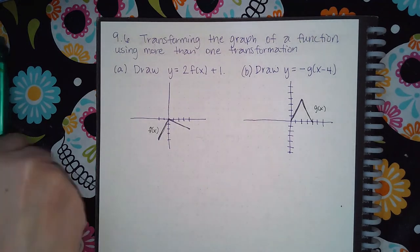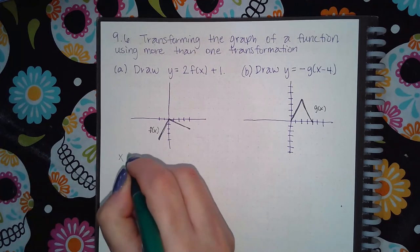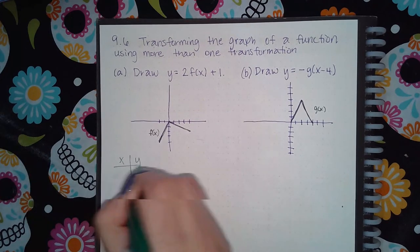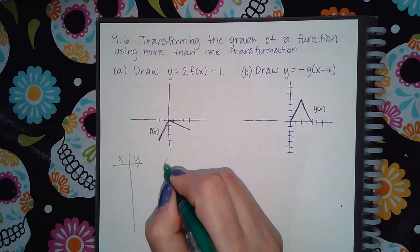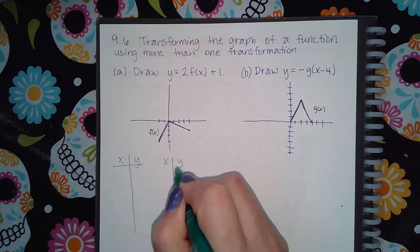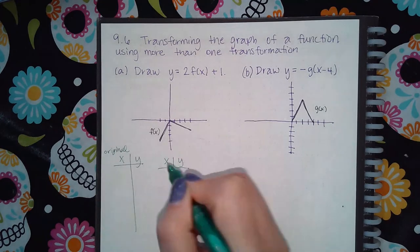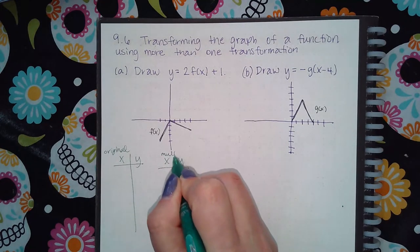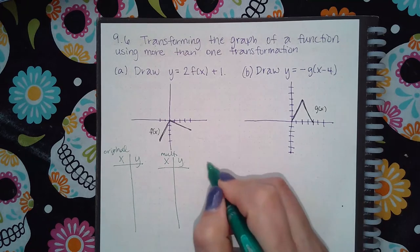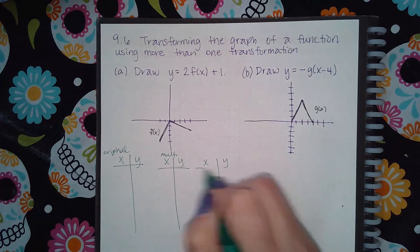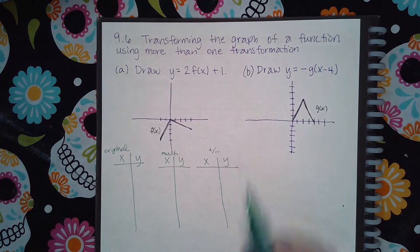So essentially what happens is you end up with two tables because you have two different translations going. And actually you end up with three because we're going to have the original. And then we're going to do the multiplication situation that's happening. And then we're going to do the addition or subtraction situation that's happening.